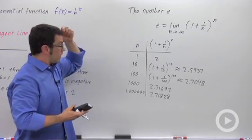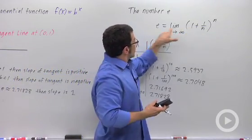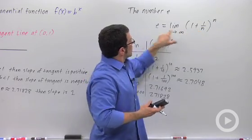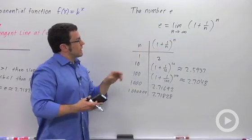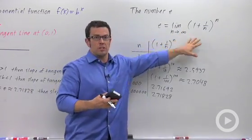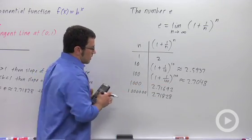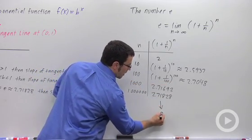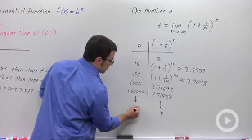So you finally get some convergence once you get n out to a million. It takes quite a while for this limit to start getting really close, for this value to start getting really close to e. But remember that e is defined as the limit of this expression. So the values are heading towards e as n goes to infinity.